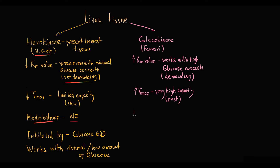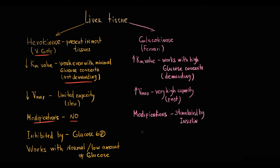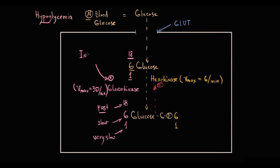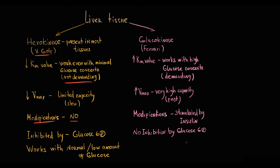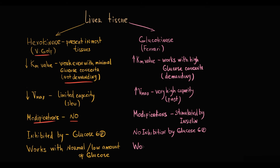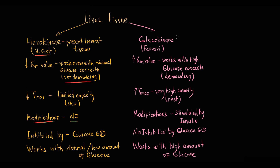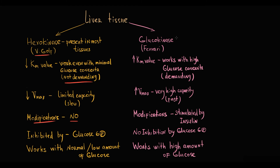Unlike hexokinase, glucokinase can be modified by the organism. The organism can modify this enzyme through insulin: with increasing insulin level, the speed of glucokinase in liver tissue increases. So insulin stimulates this enzyme. Also, the activity of glucokinase is not inhibited by glucose 6-phosphate, in contrast to hexokinase which is inhibited by glucose 6-phosphate. Glucokinase works best with high amounts of glucose, and because it is an expensive enzyme, only a few tissues — liver and pancreatic alpha and beta cells — can use it.